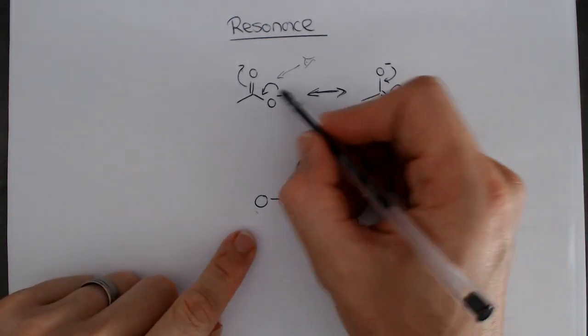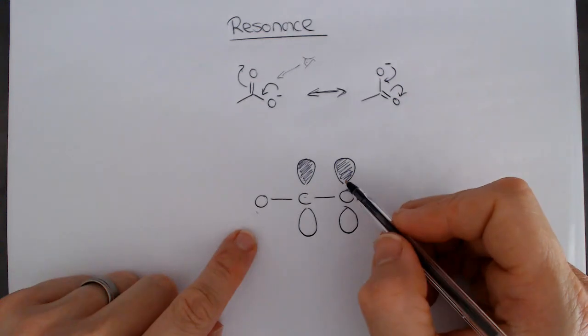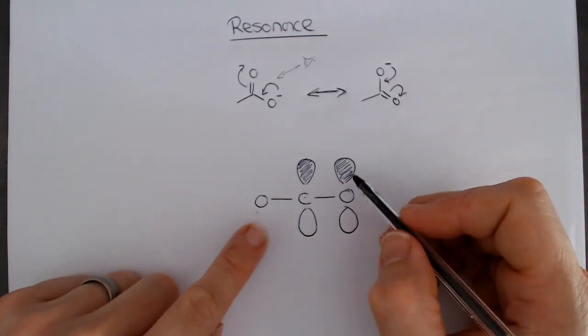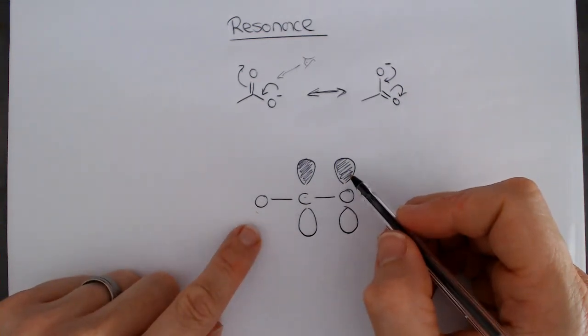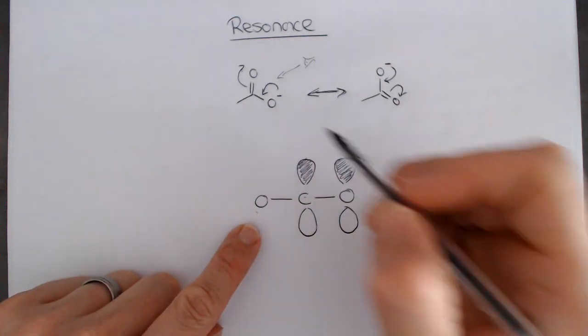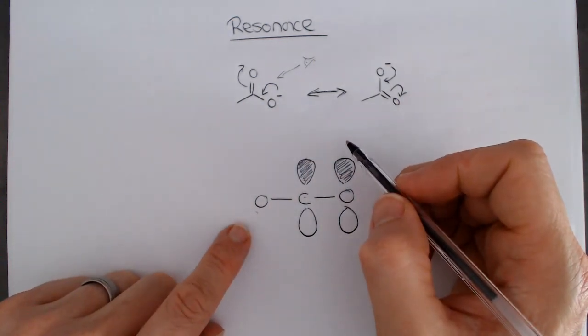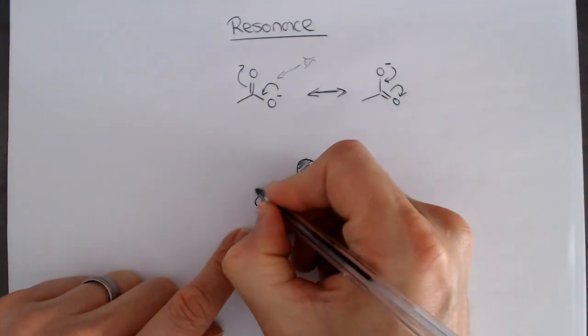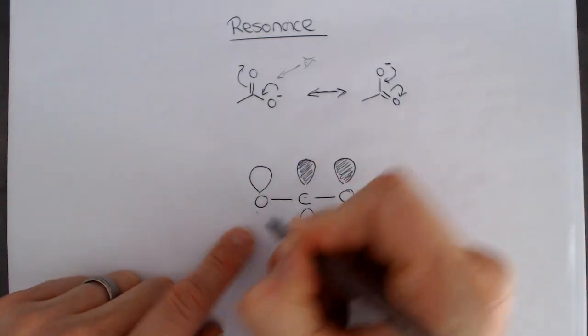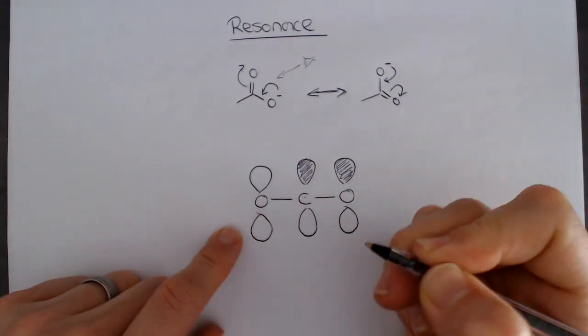But how does this negative charge influence this pi bond? The reason that it does this is because that negative charge happens to be a lone pair of electrons, which is also in a p orbital. We can draw that p orbital looking something like that.